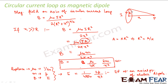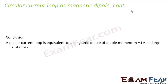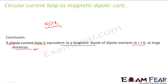So when you talk about magnetism, a magnetic dipole is nothing but a circular current loop. The conclusion is that a planar current loop is equivalent to a magnetic dipole of dipole moment m = I·A at large distances. The condition of large distances is important because we assumed x >> R to derive the expression that matches the electrostatics analogy.